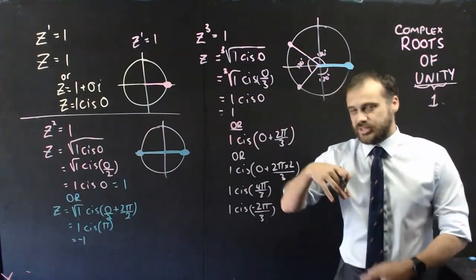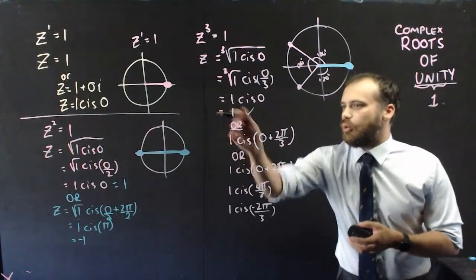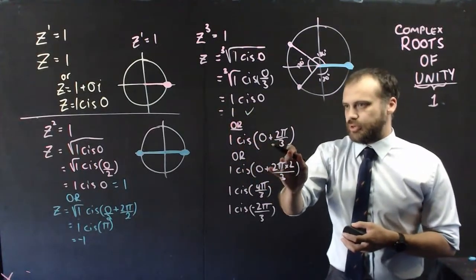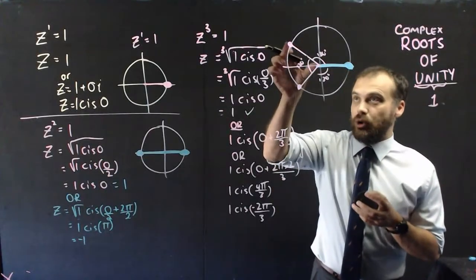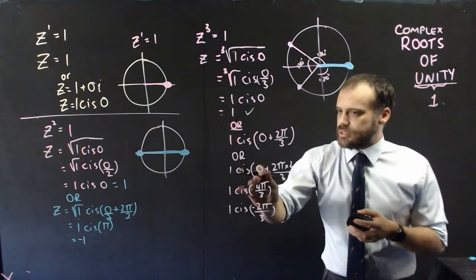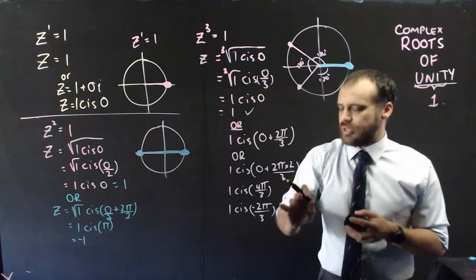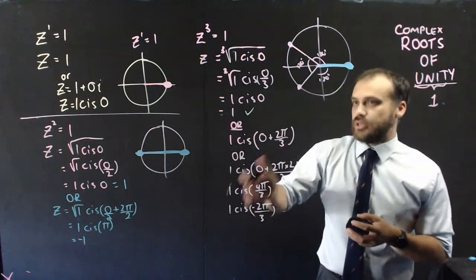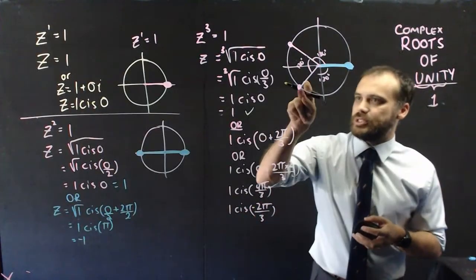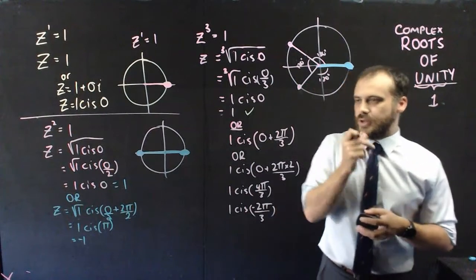I've also given these answers in purely algebraic terms. One of the answers was 1, or 1 cis(0 + 2π/3), which is just cis(2π/3) — 120 degrees. Or, 1 cis(0 + 2π × 2/3), which is cis(4π/3), which is 1 cis(−2π/3) — and that's this answer right here.